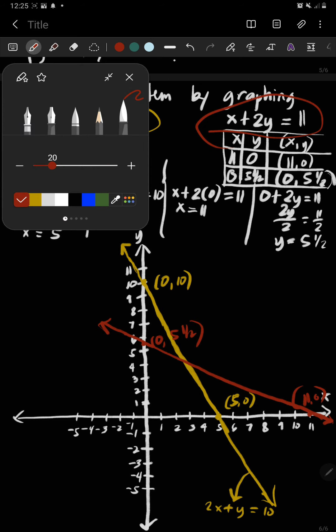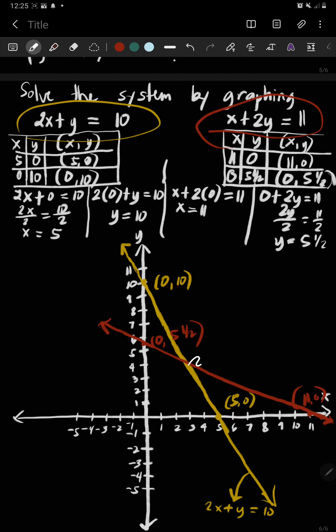So find the intersection. This is obvious, this is estimated. This is 3, 4. So therefore, the solution set is the ordered pair 3, 4, or the point 3, 4.